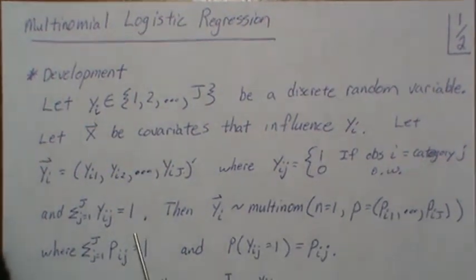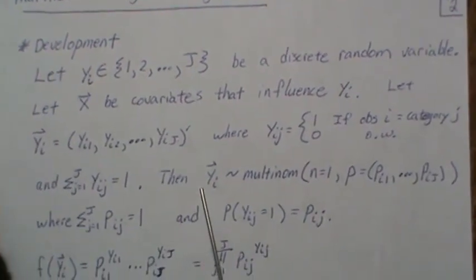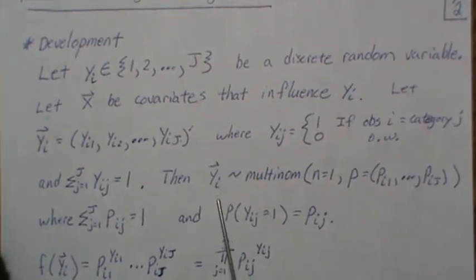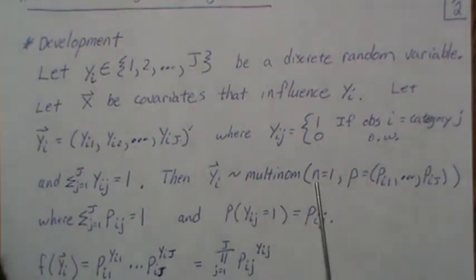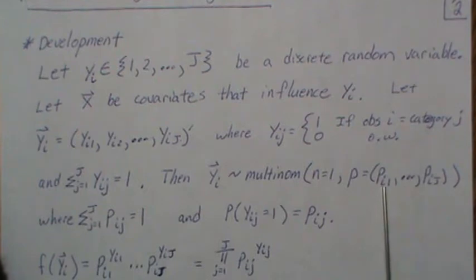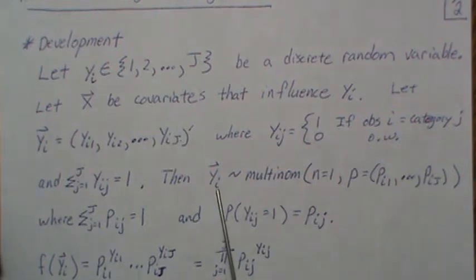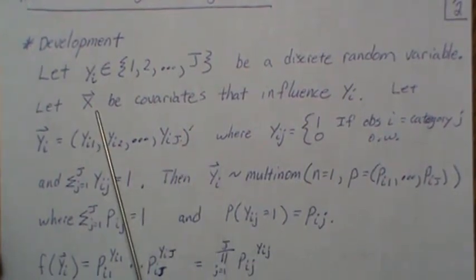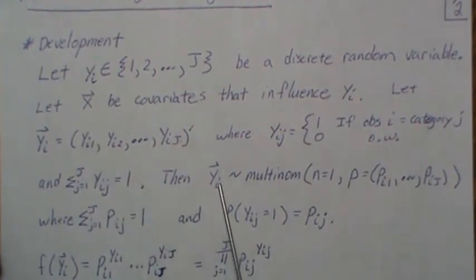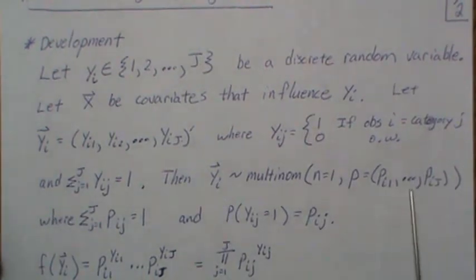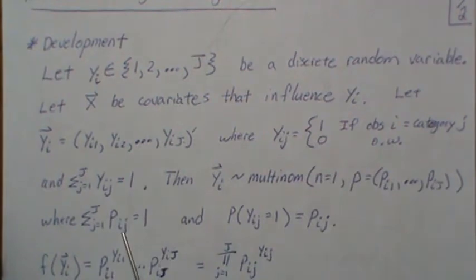Then we can let Y, this vector Yi, be a multinomial with n equal one, because it's one vector, one observation, and each of the categories has a certain probability called p1 through pj. The i is there because we're talking about individual i or observation i, and we have to write it like this because each person or each observation has a vector of covariates that may influence the outcome.